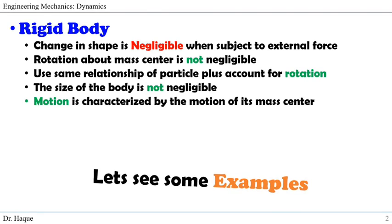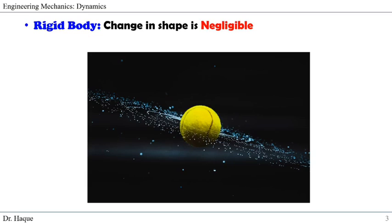Let's see some examples of what we mean by this definition. First, let's talk about why the change in shape is negligible for a rigid body. A body undergoes some form of deformation upon application of load, but it may be neglected compared with the overall dimension of the body or with the change in position of the body. Since those deformations will be very small, we can neglect that change in shape.